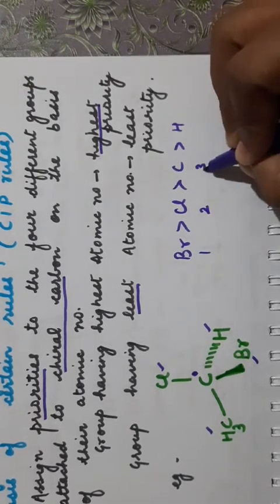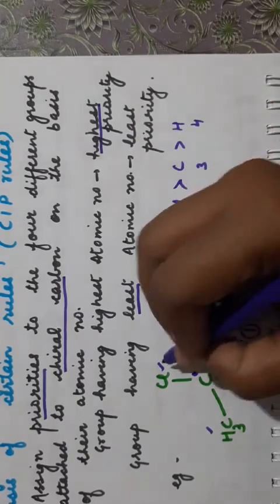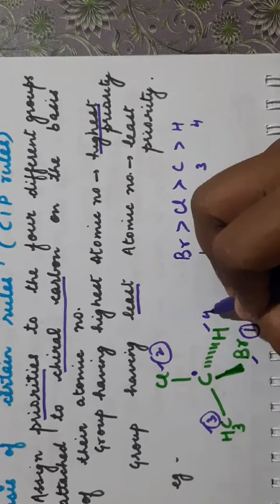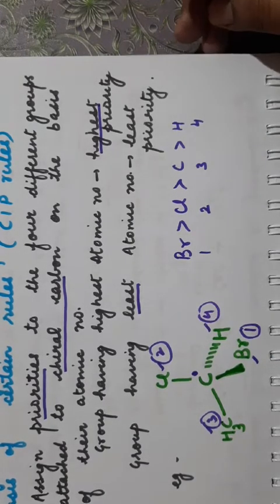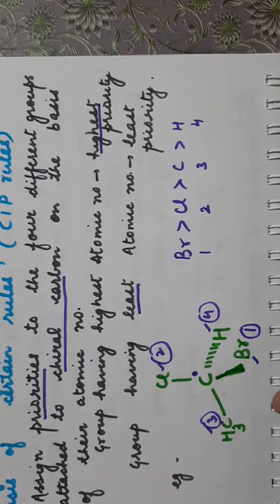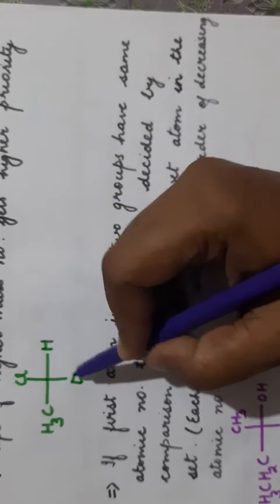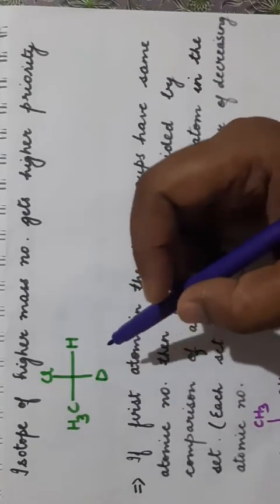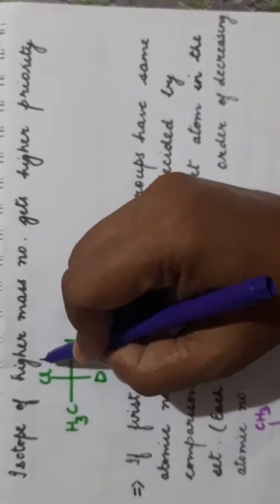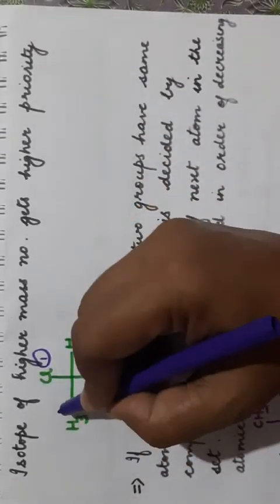So for that example, priorities are: Br = 1, Cl = 2, C (of CH3) = 3, H = 4. If two groups contain isotopes of the same element — for instance, hydrogen and deuterium — the isotope of higher mass number is given higher priority. So deuterium gets higher priority than hydrogen. If Cl, Br, and CH3 are present, priorities follow the order of their atomic numbers.